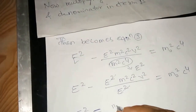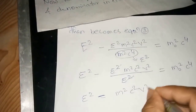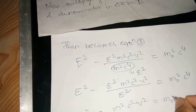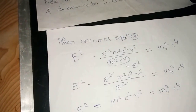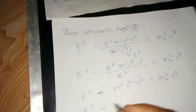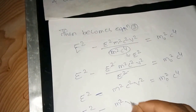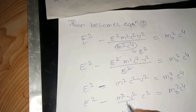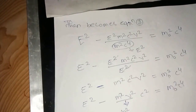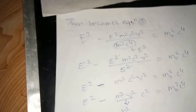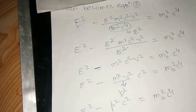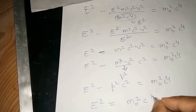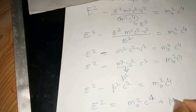Simplification: the term M square V square becomes M square V square c square. Since momentum p equals mv, we get p square. Therefore: E square minus p square c square equal to m-naught square c to the power 4, giving us E square equal to m-naught square c to the power 4 plus p square c square.